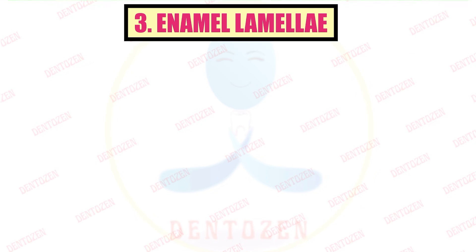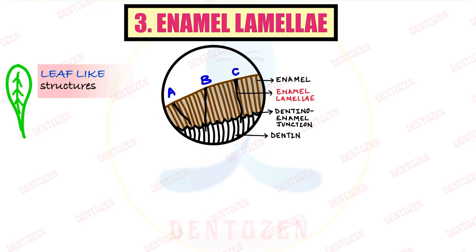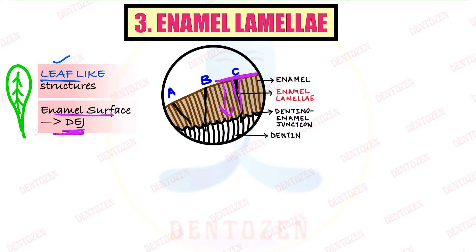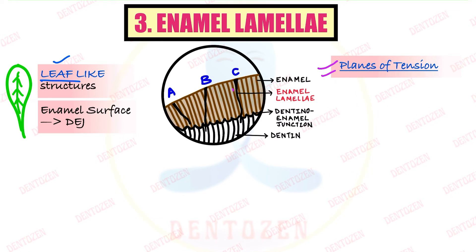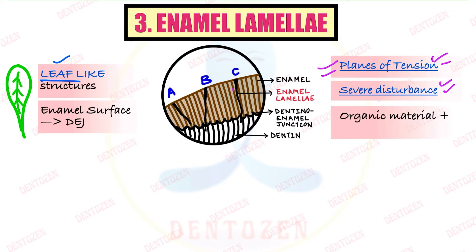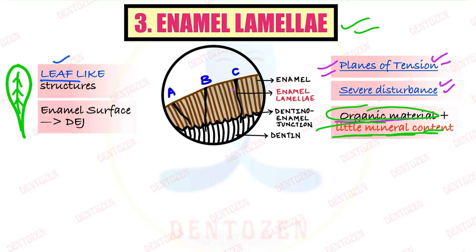Next is enamel lamellae. Lamellae means leaf-like structure. These are leaf-like structures starting from the enamel surface and going towards the dentino-enamel junction. They form because enamel rods passing across planes of tension do not get proper calcium, resulting in poorly calcified rods that appear as dark areas under the microscope. They can also form due to severe disturbance, which creates a crack in that region of enamel that later gets filled with organic material. These enamel lamellae have more organic component and very little mineral content — less calcium — and are called hypomineralized structures.